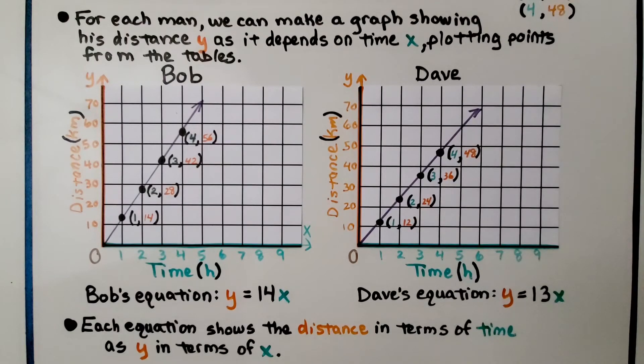So we make a graph for each man, and we plot the points for the x and y values, the x coordinates and the y coordinates.